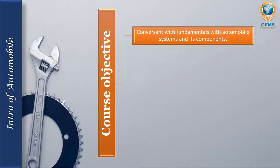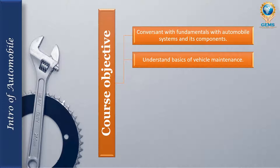The automobile engineering diploma will give you fundamental knowledge of vehicle components. The second objective is to understand the basics of vehicle maintenance. For example, if the vehicle gets a puncture, how do you repair it? How do you maintain it? These are small vehicle maintenance tasks. The diploma will give you an overview of small parts maintenance and the basics of vehicle maintenance.